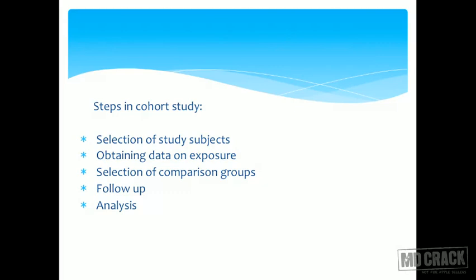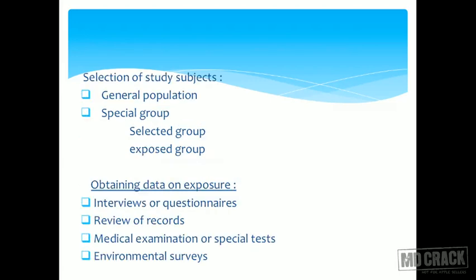The steps in a cohort study are: selection of study subjects, obtaining data on exposure, selection of a comparison group, follow-up, and analysis. For the first step, selecting study subjects from the general population is not very common or easy, because identifying who is exposed versus not exposed is unclear for environmental contaminants, leading to a lot of overlap.